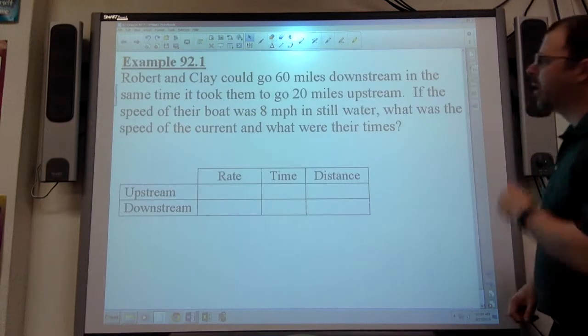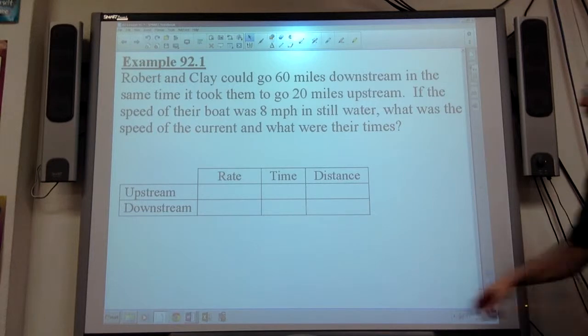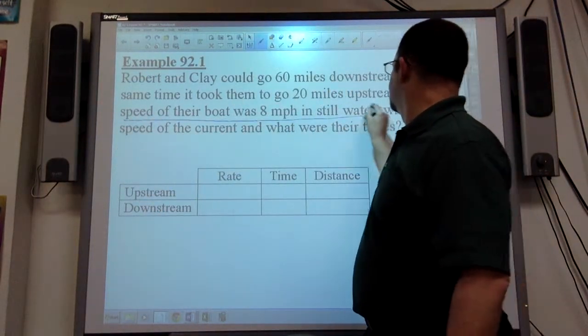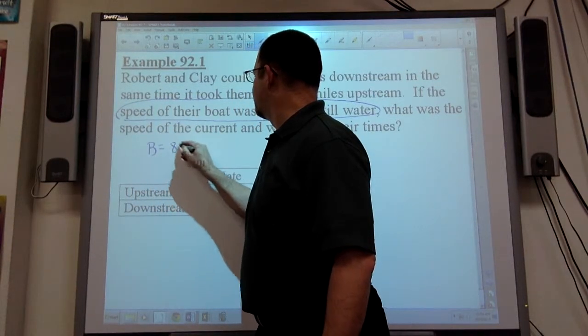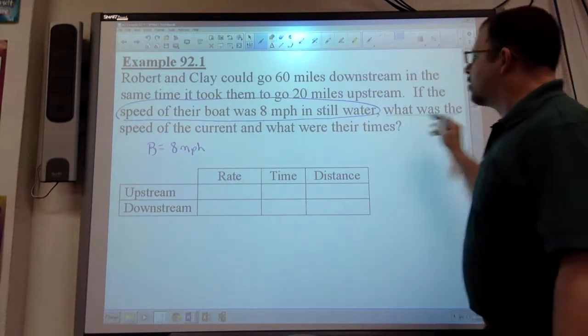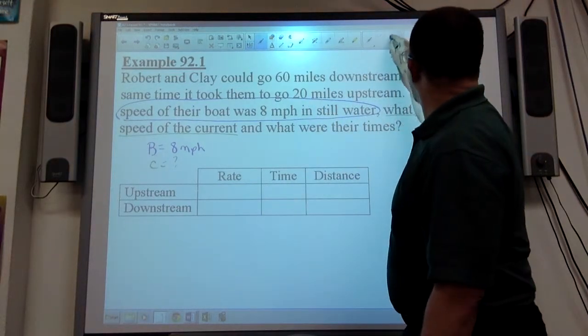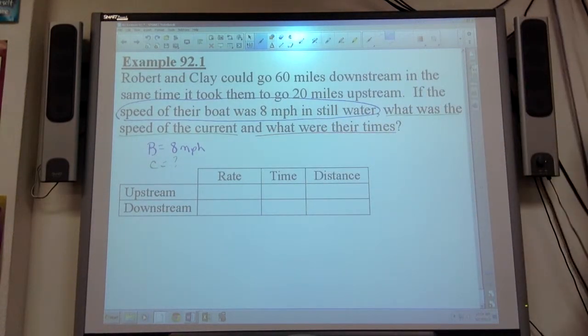So let's take a look at example one. Robert and Clay could go 60 miles downstream. At the same time, it took them to go 20 miles upstream. If the speed of the boat was 8 miles per hour in still water, what was the speed of the current? And what were their times?